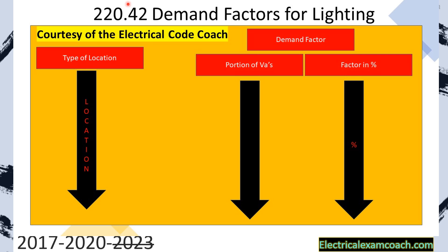We're also allowed to use it for the entire three VAs per square foot plus the 4,500 that we tacked on for the two small appliance and one laundry. Using this table, we start on the left-hand side and find our location. The first one we find is dwelling units. Then we're going to find hospitals, hotels and motels, warehouses, and really important down here at the bottom, it says all others.